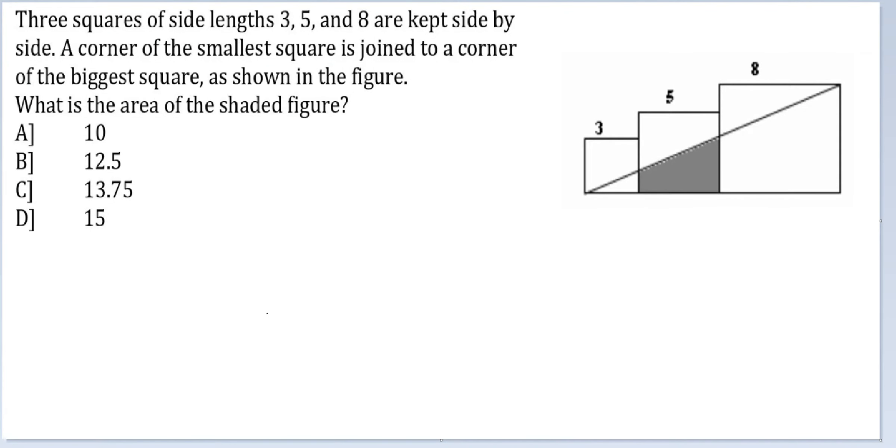Let's look at this question. Three squares of side lengths are kept side by side. A corner of the smallest square is joined to a corner of the biggest square as shown in the figure. What is the area of the shaded figure? So we need to find out this area.